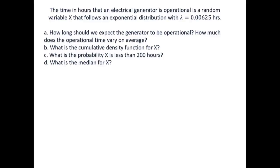So the first question is how long should we expect the generator to be operational? Well the expected amount of time is actually the average, so the expected value of an exponential random variable is equal to its average mu X which is equal to 1 over lambda. So in this case we know what lambda is, it is equal to 0.00625. So if we calculate this we find that the expected number of hours is 160 hours. So that's how long we would expect the generator to be operational.